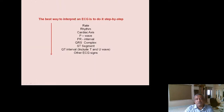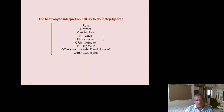The best way to interpret any ECG is to go step by step: rate, rhythm, axis, P wave, PR interval, QRS, ST segment, QT interval, and other ECG abnormalities. These are the headings under which an ECG should be reported — including P wave configuration, whether the PR interval is normal or prolonged, whether QRS is narrow or wide, whether the ST segment is isoelectric or elevated or depressed, and the QT interval including T and U waves.